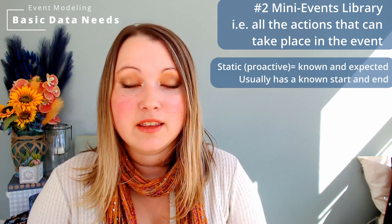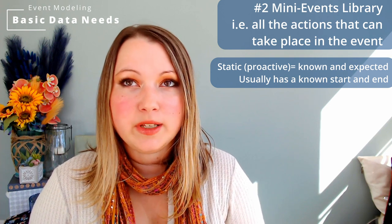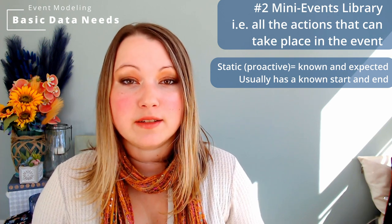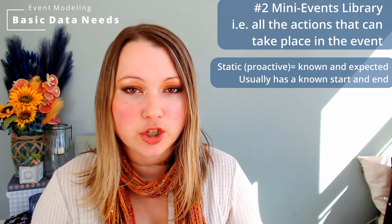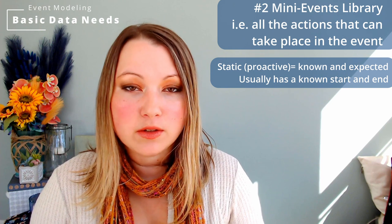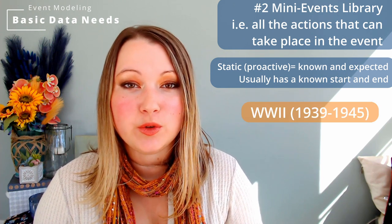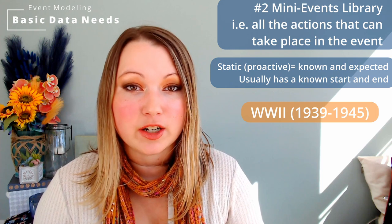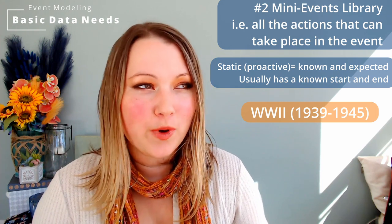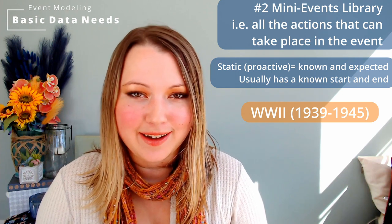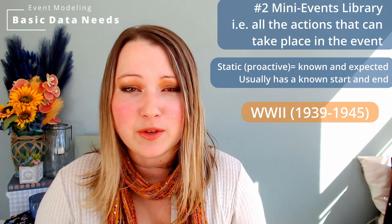There are three different types of events. The first is a static event — this is the most common in a regular taxonomy. This could be an event of purchase where you just know somebody made the action of purchasing. Or it could look like World War II with the timeframe it occurred — we know when it started and when it ended, so historically the dates are pretty much known.